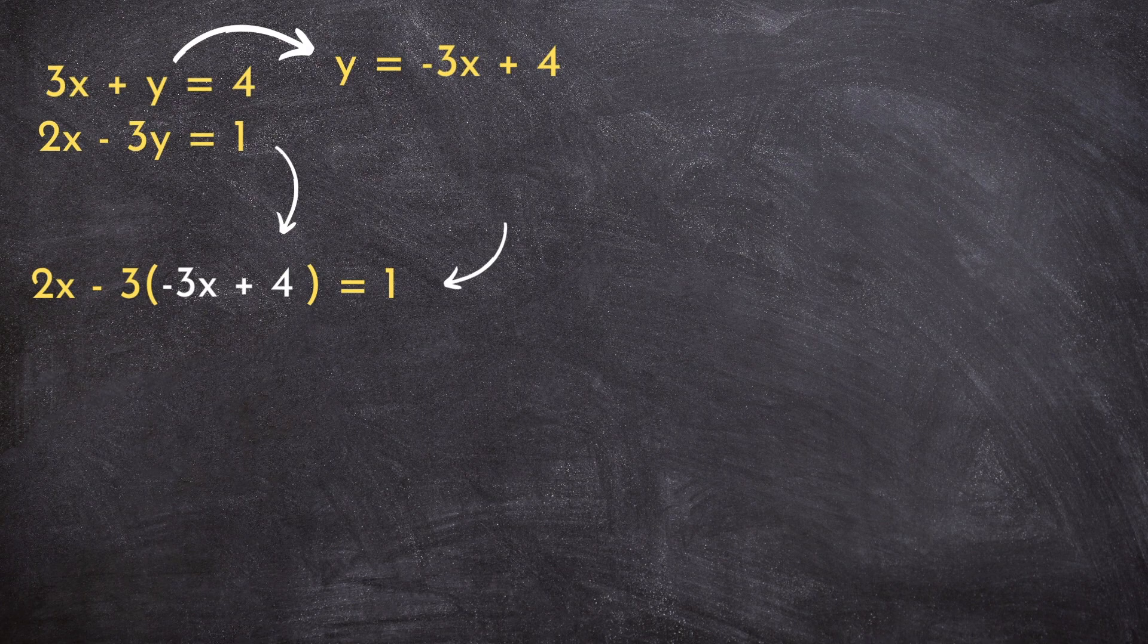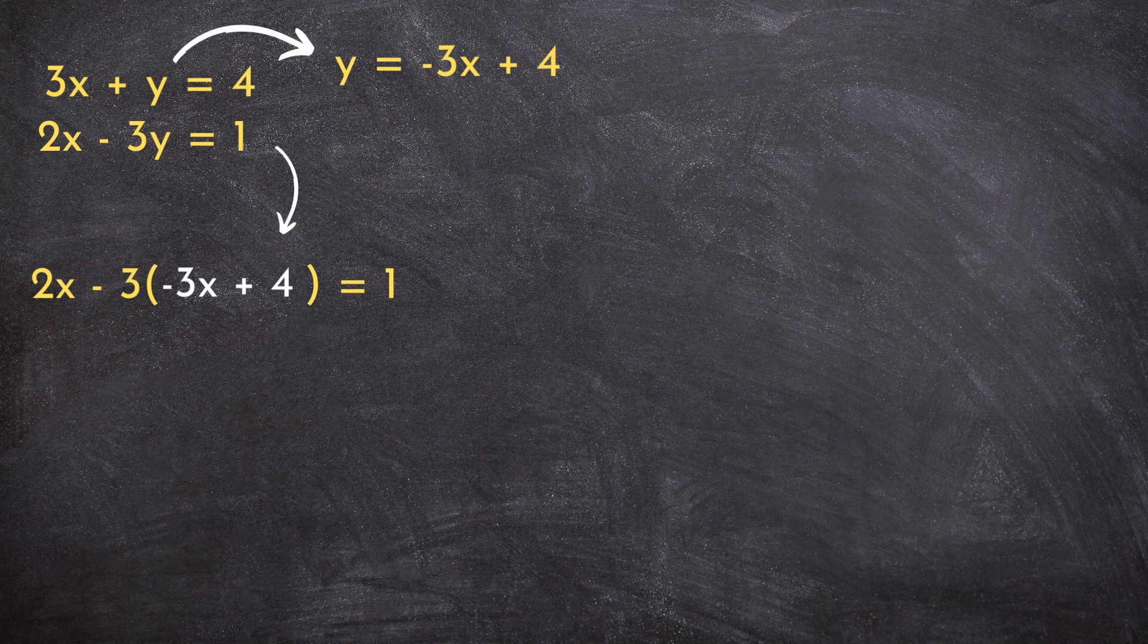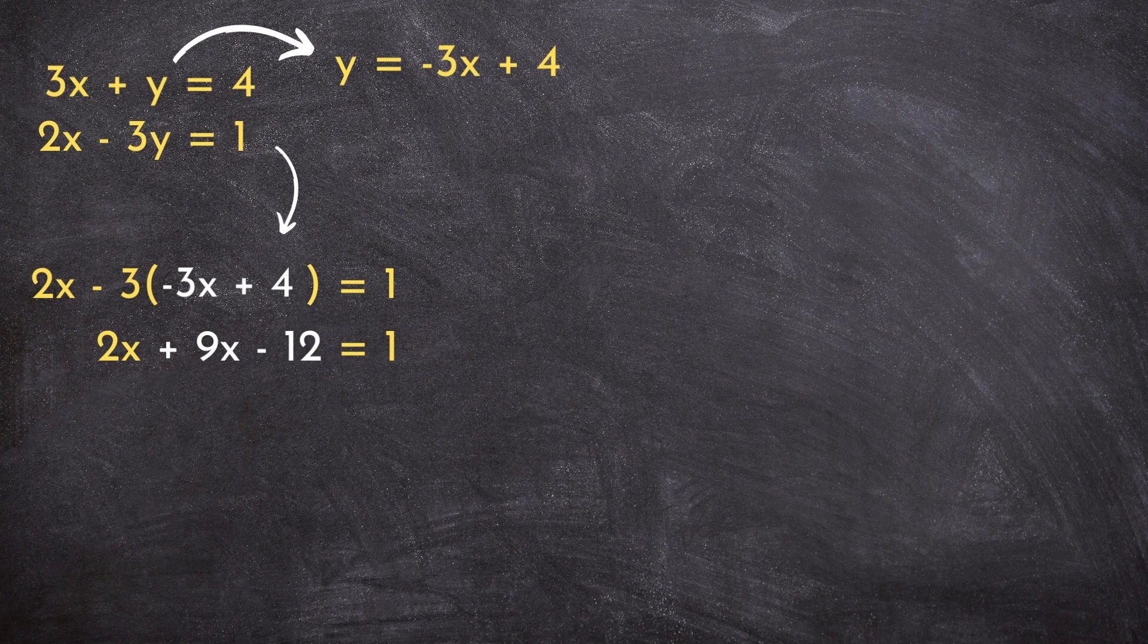And after I've done that, it's really just a matter of applying some algebra to clean things up and solve for x. We're going to do that using some algebra strategies like the distributive property. Multiplying negative 3 by both terms in my brackets is going to result in 2x plus 9x minus 12 equals 1.